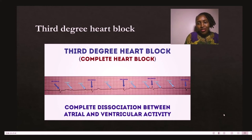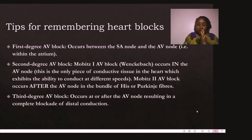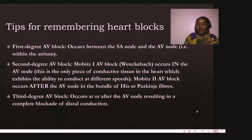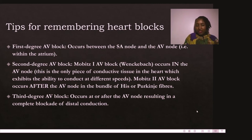To summarize about heart blocks: first-degree block occurs between the SA node and the AV node — within the atria. There is miscommunication between the SA node (the natural pacemaker) and the AV node. Second-degree Mobitz type one occurs at the AV node itself, where there is some conductivity but at different speeds. Type two occurs after the AV node — either in the bundle of His, its branches, or the Purkinje fibers. Third-degree block occurs at or after the AV node, resulting in complete blockage of distal conduction — the impulse won't reach the bundle of His at all.